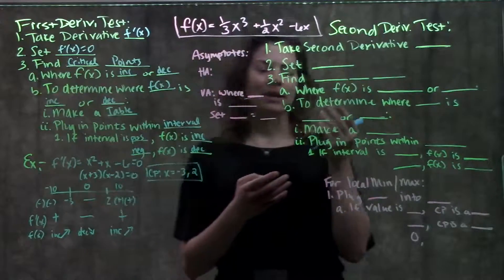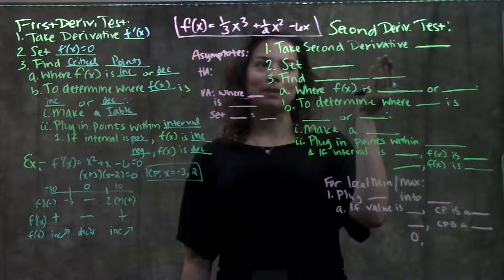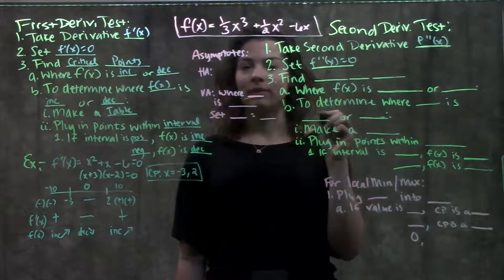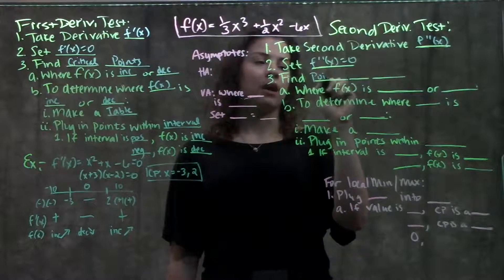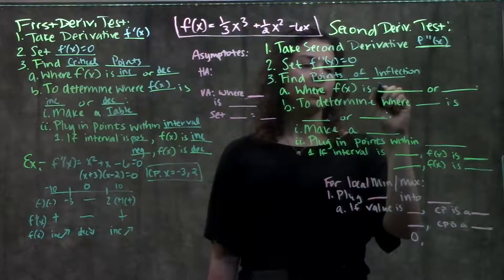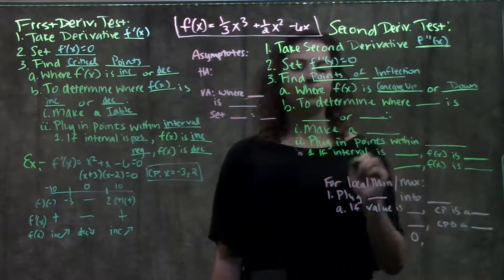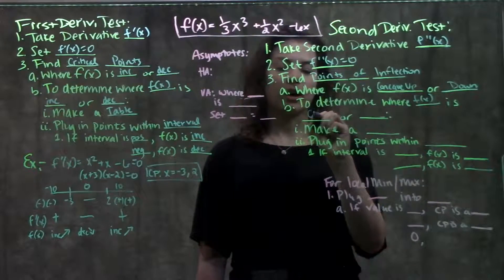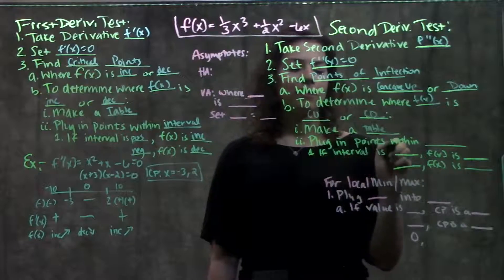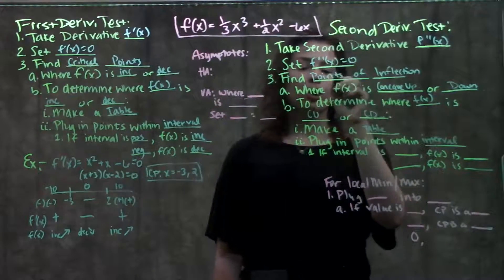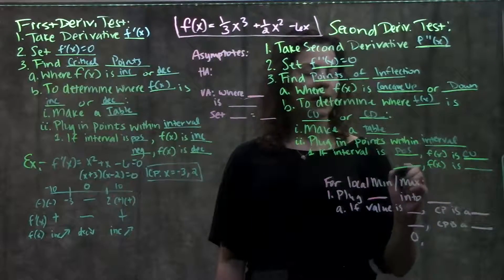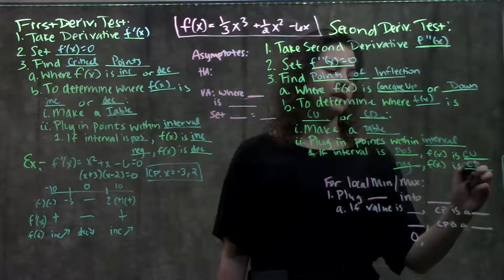Moving on to our second derivative test — you'll notice it's very similar to the first. Our first step is to take the second derivative, f double prime of x. Then we set our second derivative equal to zero, and when we solve those x values we get points called points of inflection. Points of inflection tell us wherever our original function f of x is concave up or concave down. We make a table or number line, plug in points within each interval, and if the result is positive f of x is concave up; if negative, it's concave down.